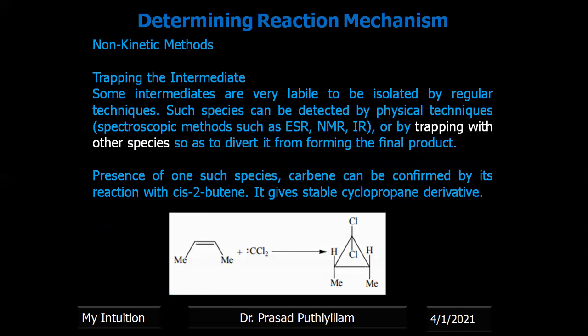For trapping intermediates — when intermediates cannot be easily isolated — we can use physical techniques such as spectroscopy methods like ESR, NMR, or IR, or we can trap the intermediate. One example is trapping the intermediate carbene. Carbene acts as an intermediate during a reaction mechanism but cannot be easily isolated; however, it can be trapped using, for example, cis-2-butene. The cis-2-butene reacts with the carbene to form a stable product — cyclopropane or its derivatives.